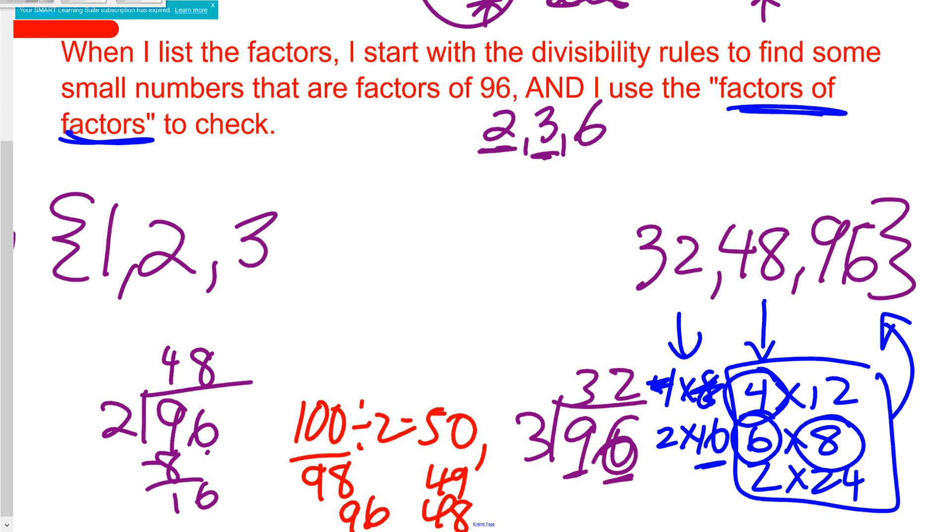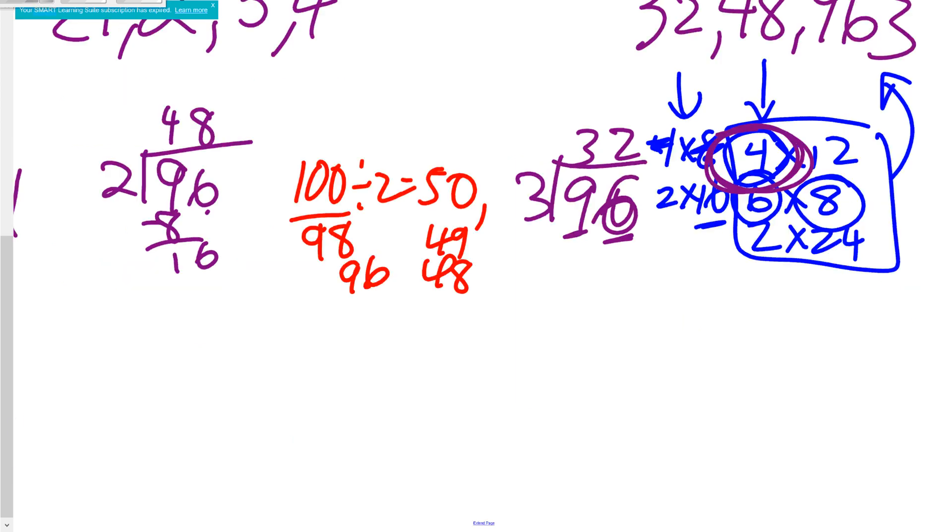So back to work. After the number 3 is the number 4, which I now know works because I saw it right here with 48. So I'm just going to have to go back to doing some division. I'm going to have to divide 96 by 4.